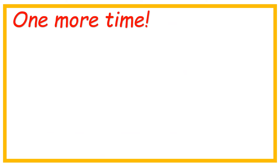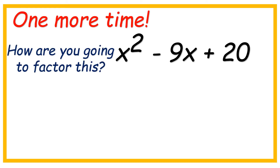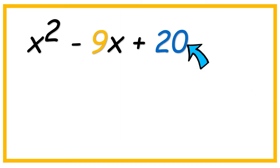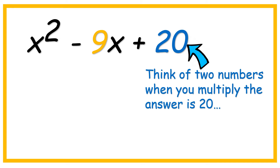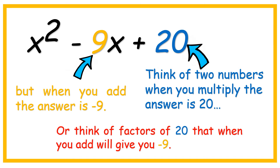One more time. x squared minus 9x plus 20. How are you going to factor this? Again, focus on the last number and the middle number — 20. Think of two numbers: when you multiply, the answer is 20, but when you add them, the answer is negative 9. Or think of factors of 20 that when you add will give you negative 9.